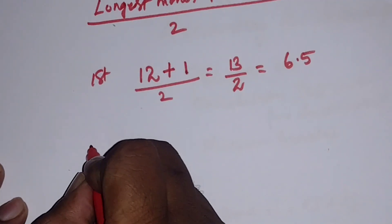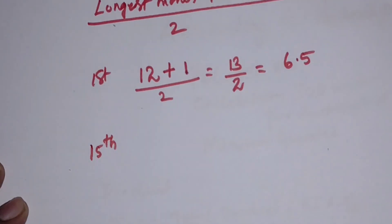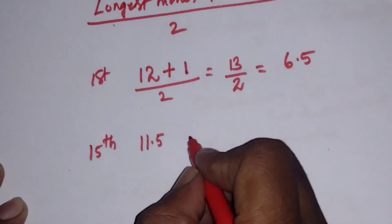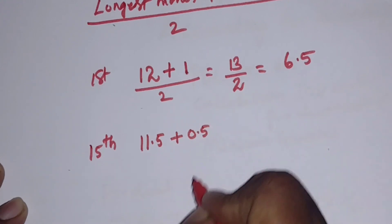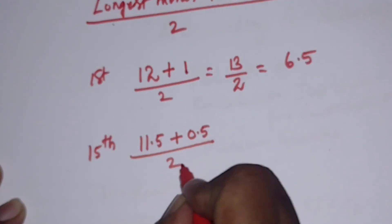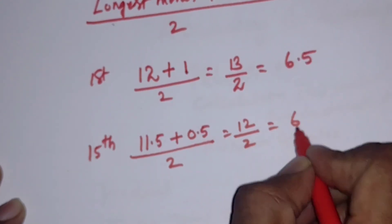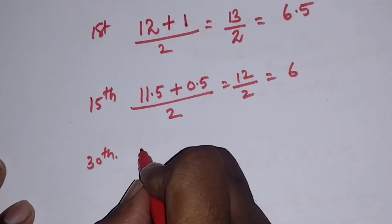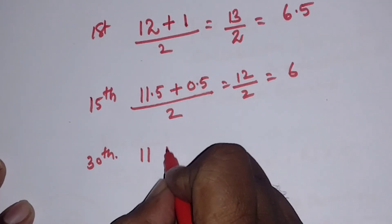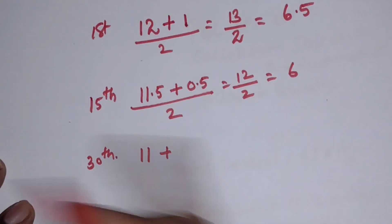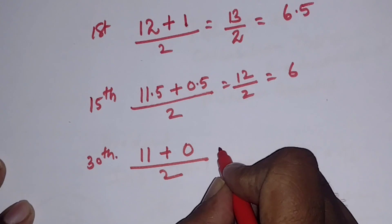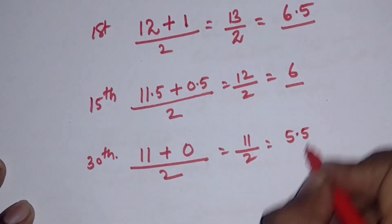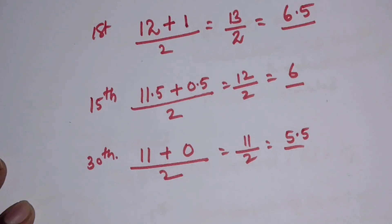If drawings are made on the 30th of every month, since the year is already over by the last day, the longest month interest is 11 months and the shortest is 0 months, giving an average of (11 + 0) / 2 = 5.5 months. This average of the month figure is applied in the problem.